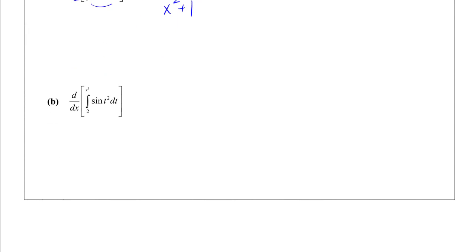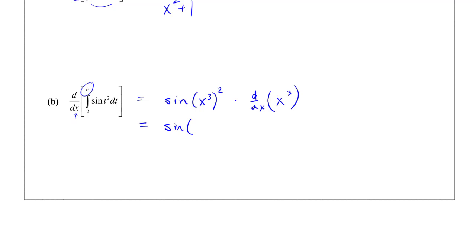Here it's a bit different — we have x cubed in the upper limit instead of x, so there's a chain rule factor. The integrand sine(t²) with t replaced by x cubed gives sine(x⁶), times the derivative of x cubed which is 3x². So the answer is 3x² times sine(x⁶).